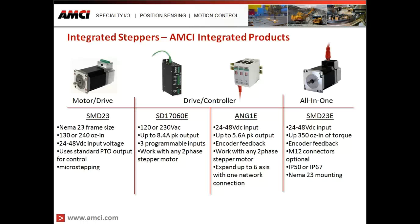Our integrated drive and control is available in either AC or DC input voltage. The AC version has a peak current output of up to 8.4 amps, and the DC version has a peak current of up to 5.6 amps. Both integrated drives work with standard two-phase stepper motors and have programmable inputs for additional functionality such as registration, electronic gearing, and homing.